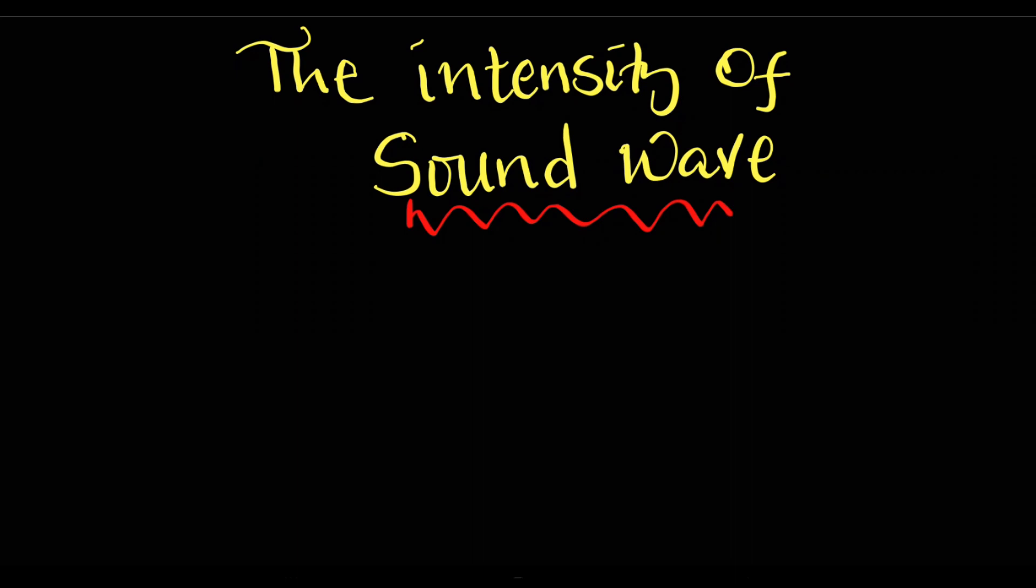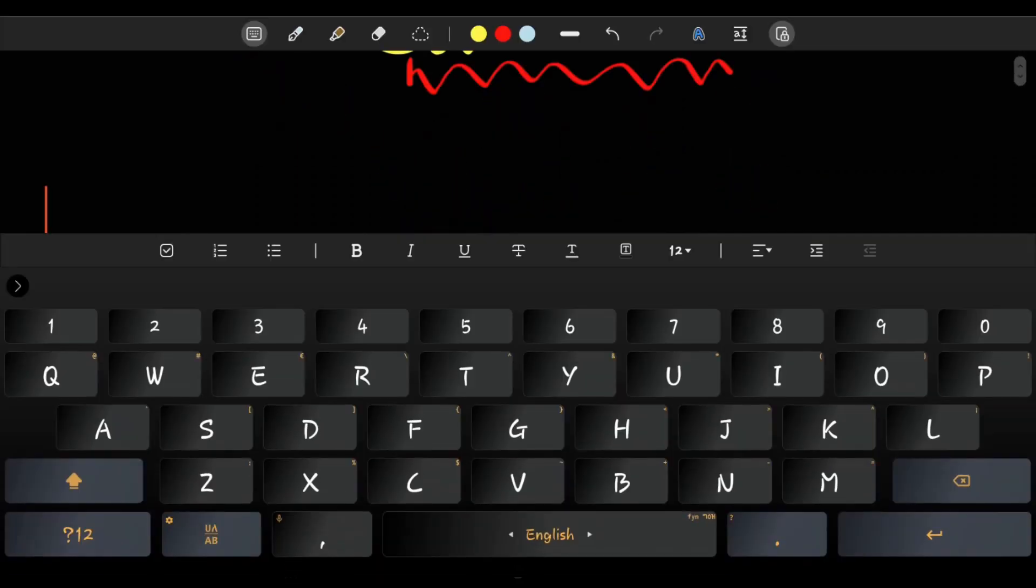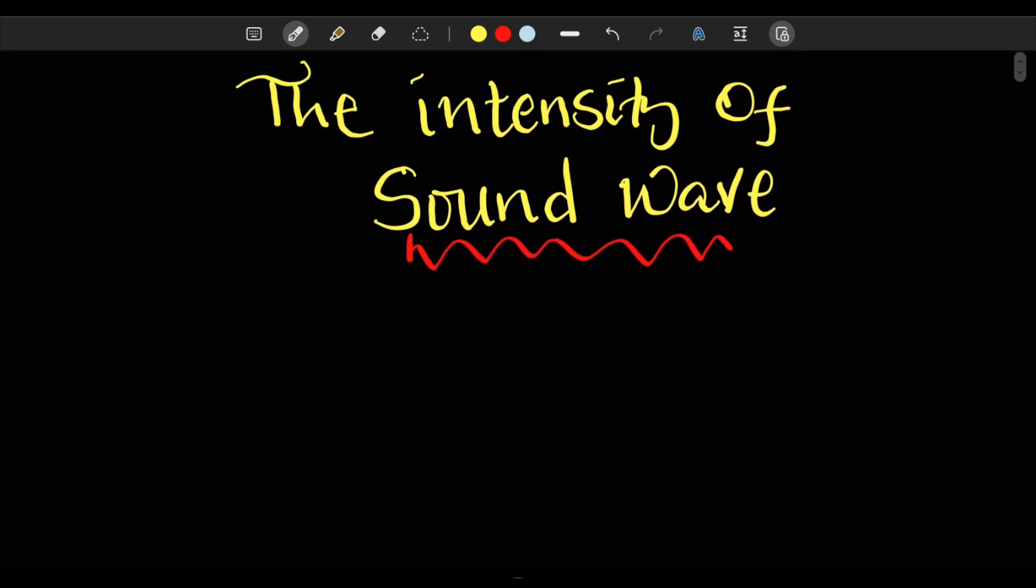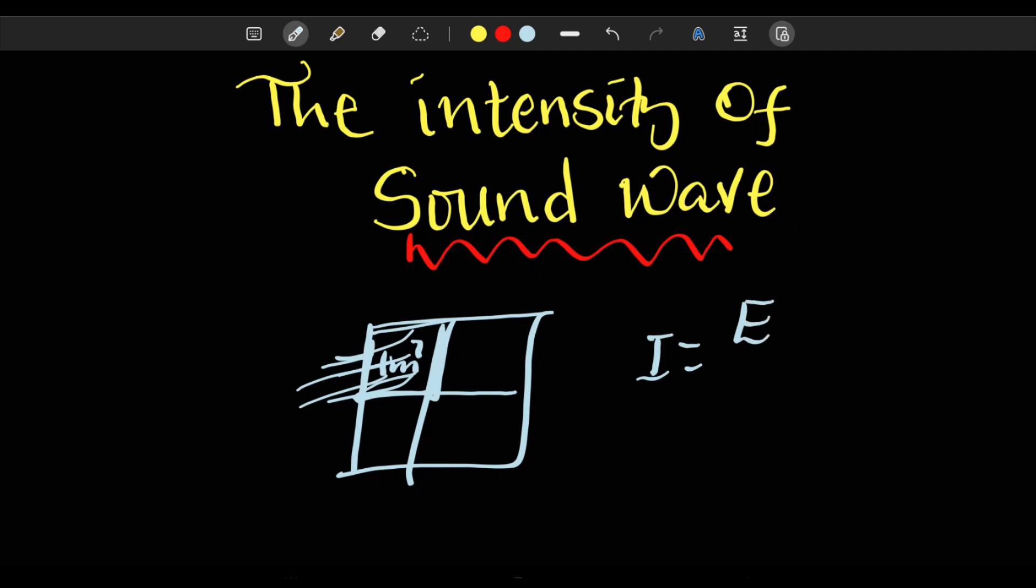So I'm going to show you the intensity of sound. When we say sound intensity, it refers to, for example, let's say there is some kind of surface like this. Intensity refers to the amount of energy that falls in a given area in every second. When we say sound energy, it refers to the surface area, and when we say sound energy it refers to the intensity.